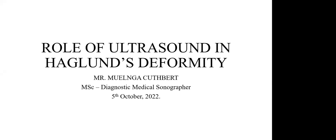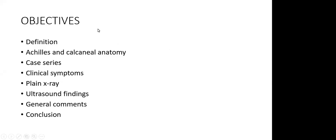I know that people are practicing musculoskeletal ultrasound both in diaspora, locally, and within neighboring countries. My objectives are very straightforward: I will define what Haglund's deformity is, briefly discuss the anatomy, the case series, clinical symptoms, how it appears on plain X-ray, ultrasound findings, and general comments. I wish to finish on time so we can have more discussion.